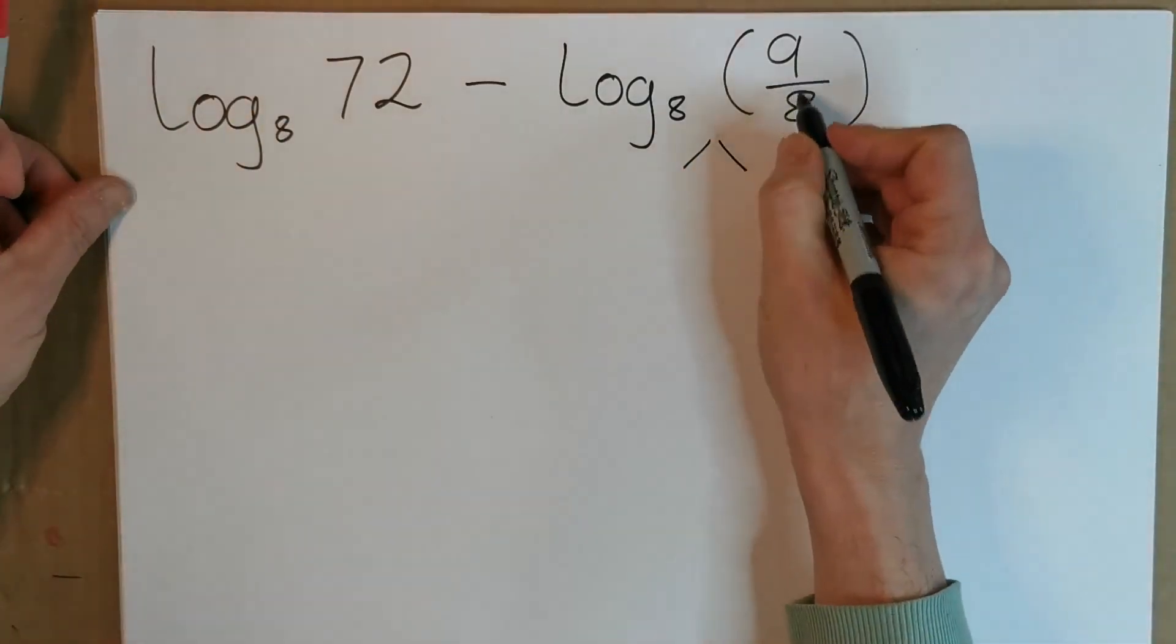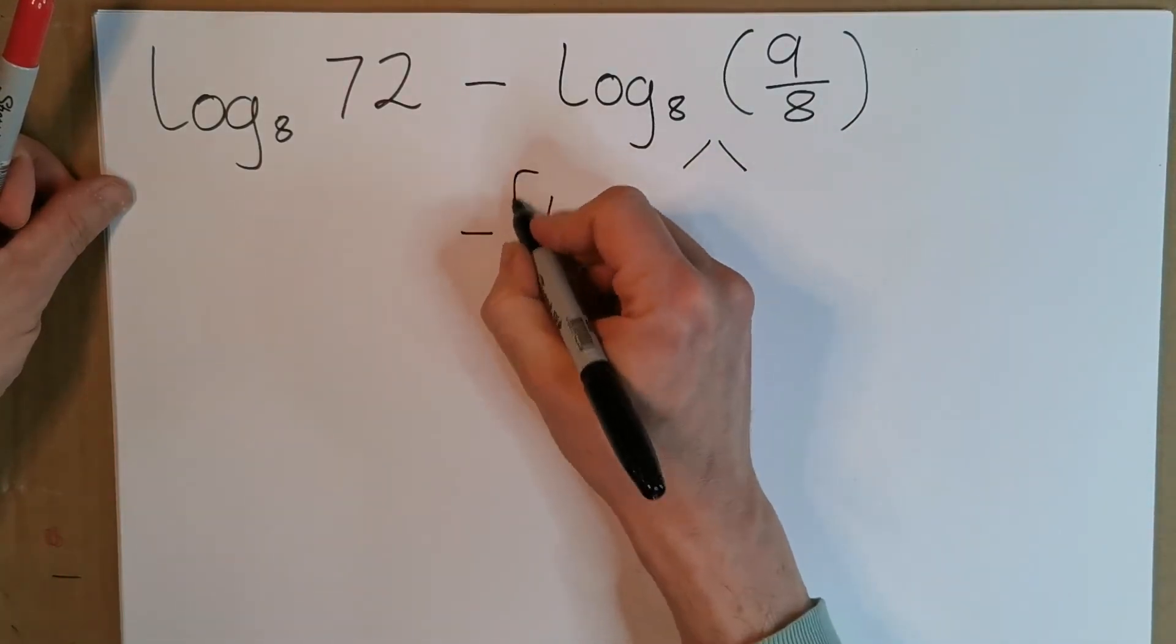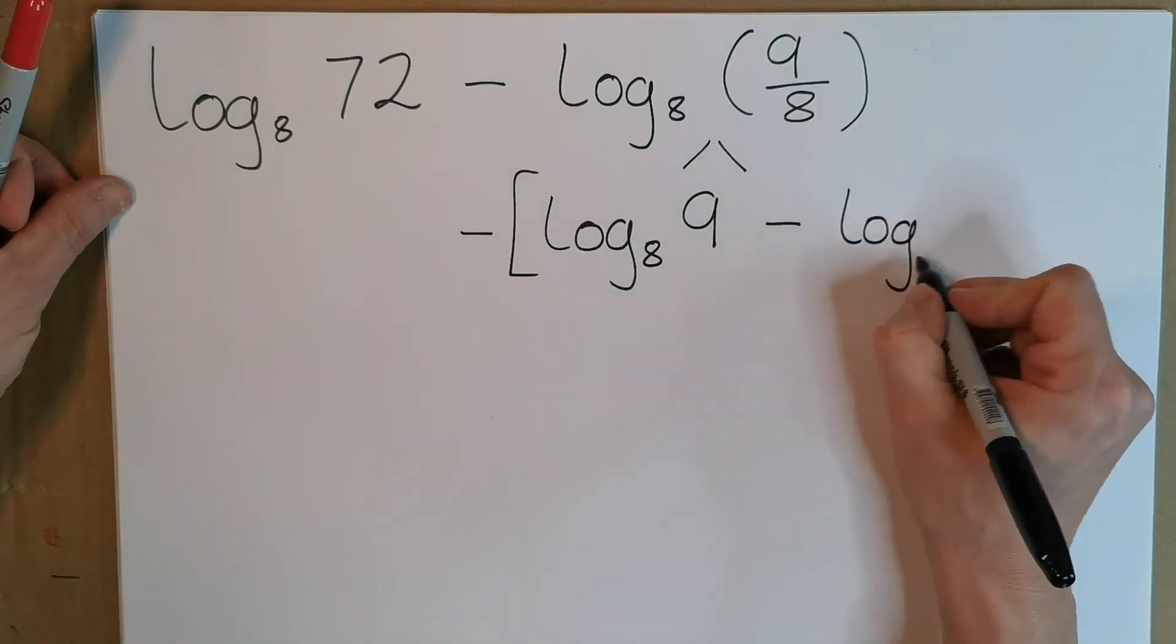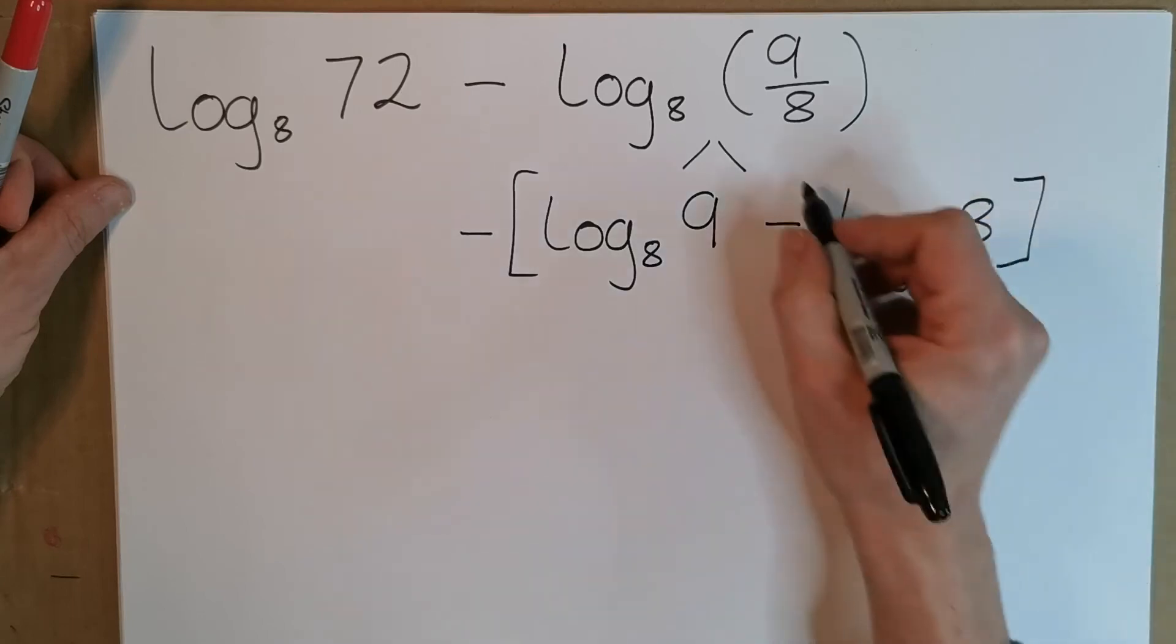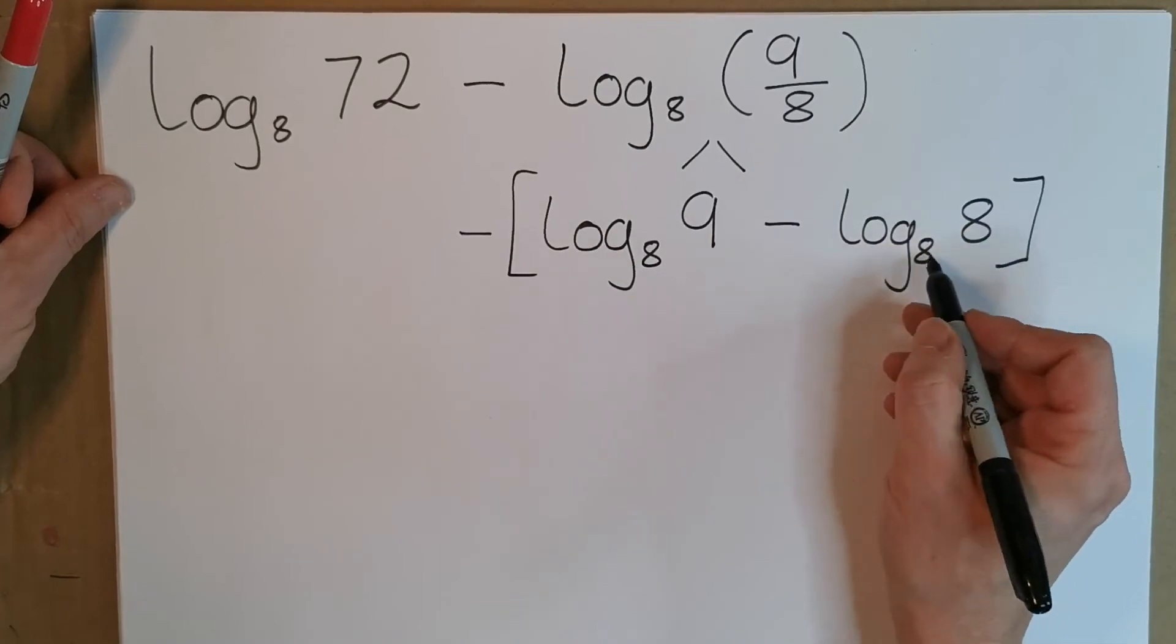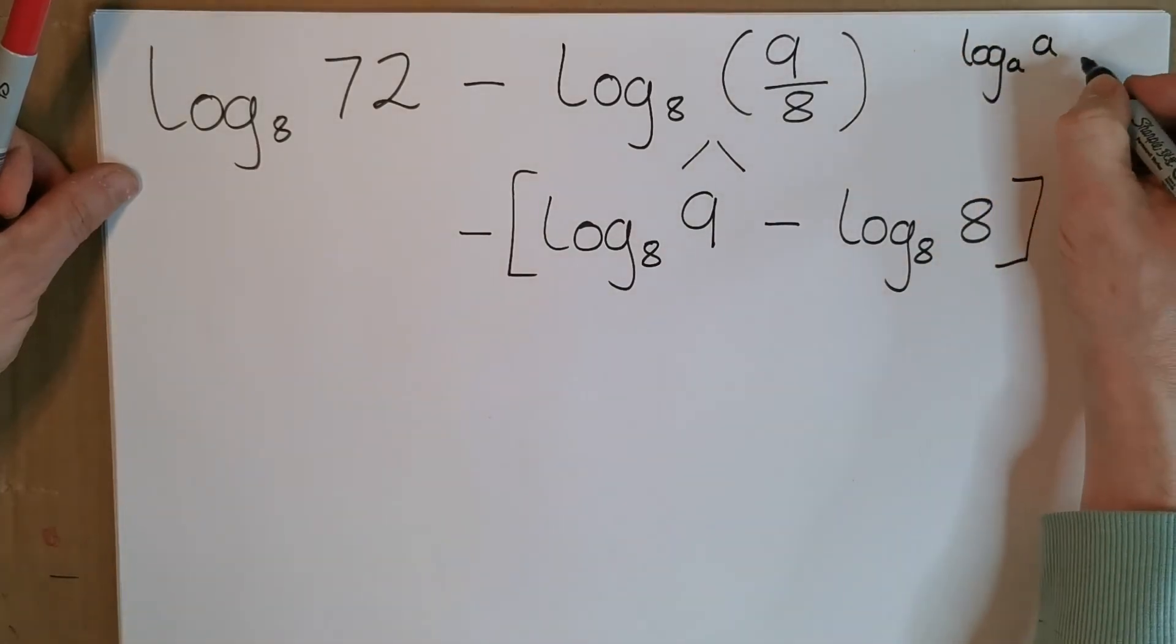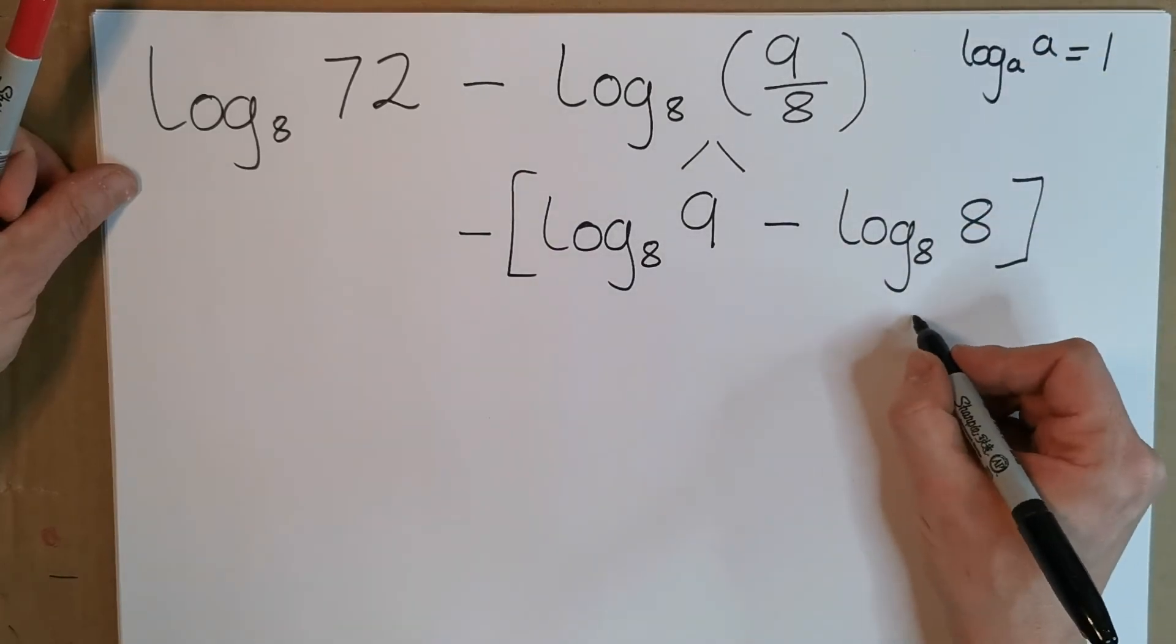You can actually split this because it's a division of 9 over 8. We can say minus the log base 8 of 9 minus the log base 8 of 8. It's the top one minus the bottom one. Now straight away we can see that log base 8, 8 to the power of what gives 8, that's just 1. There is a rule saying log to some base of the same number equals 1, because 8 to the power of 1 gives you 8. So this is just 1.